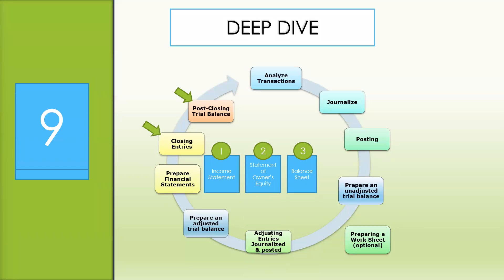Next, for step nine, we move on to the closing entries. Closing entries are journalized and posted to the ledger in step nine of this 10-step accounting cycle.